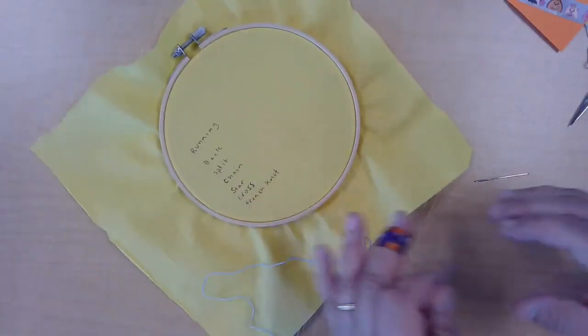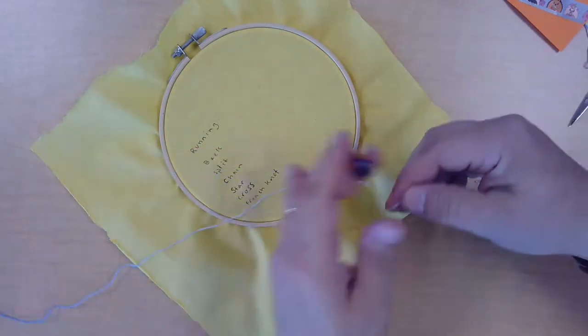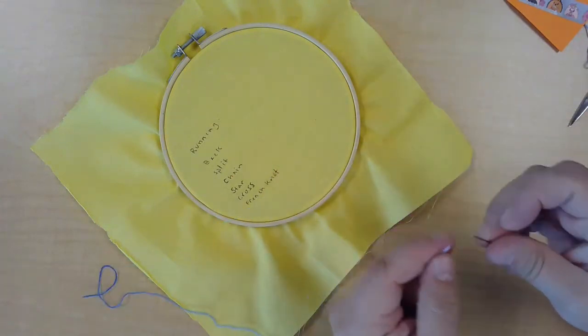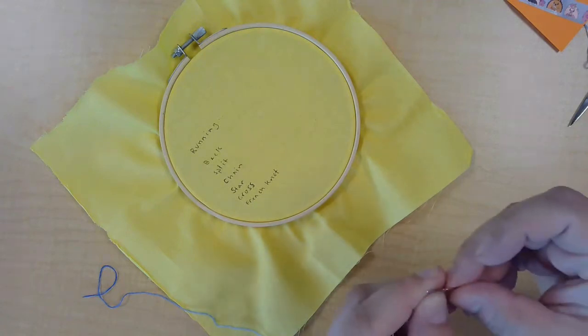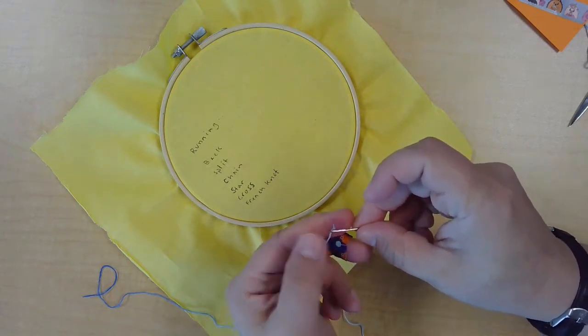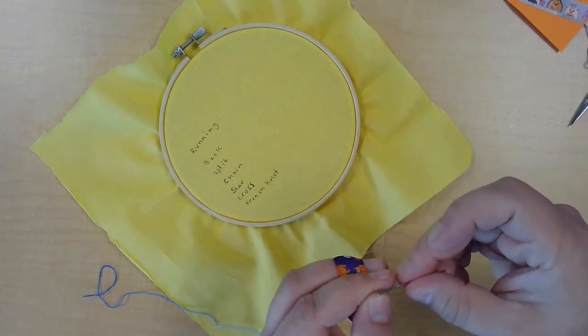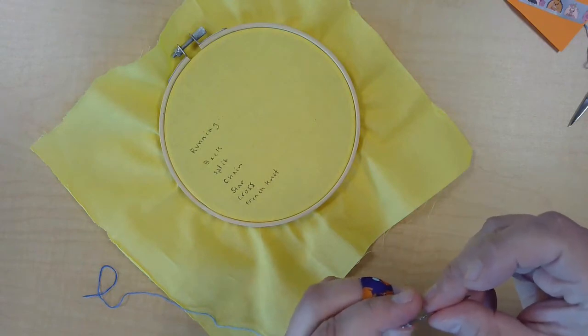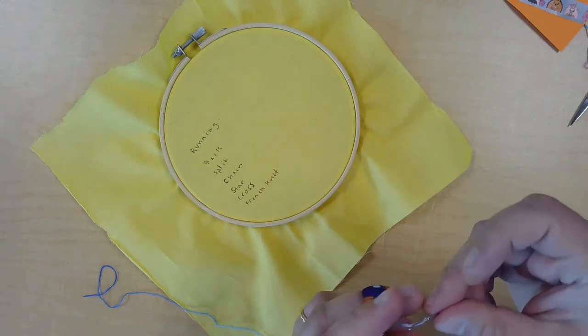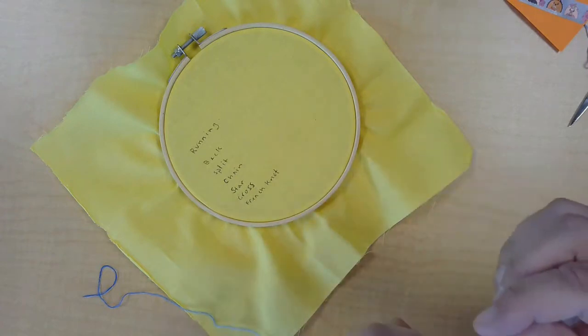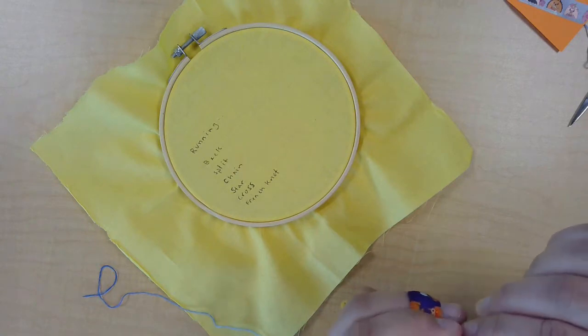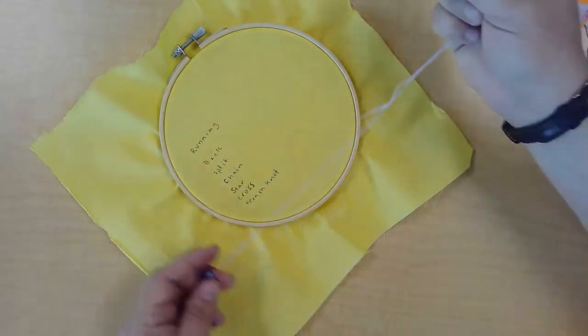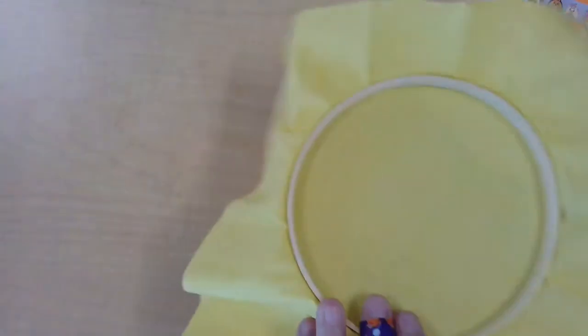All right, now that you've separated your floss, you're going to take one half and you're going to thread your needle. You might want to dampen the ends of your floss to make it a little bit easier to thread. When the threads stick together of your floss, it's a little easier to get through the eye of the needle. And you're going to want to make sure that you leave a little bit hanging over from the end there. As you'll see in a second, once I get mine threaded, sometimes it takes grown-ups a bit too.